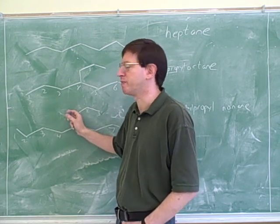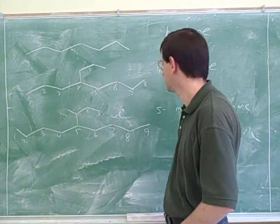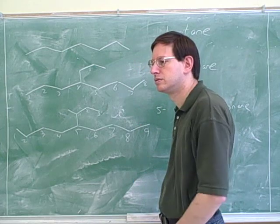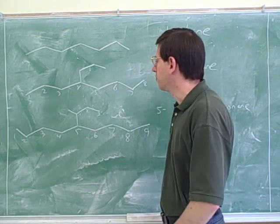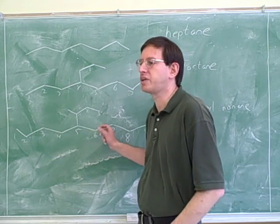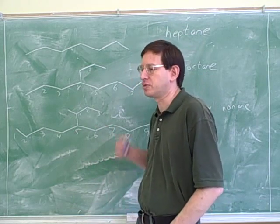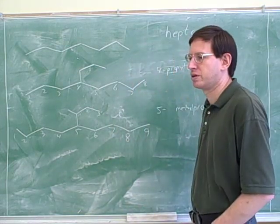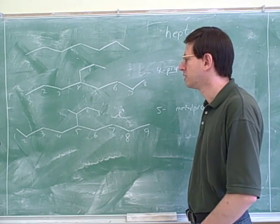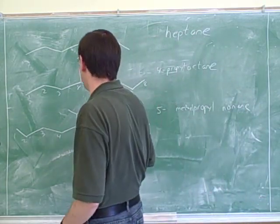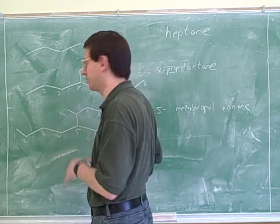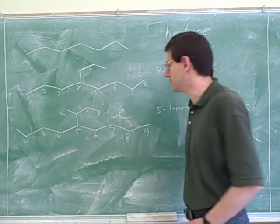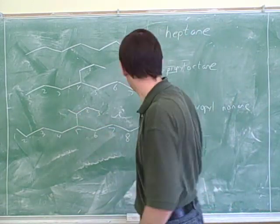The number one carbon in the substituent is always the carbon that's connected to the parent chain. That's a totally different rule than we use for figuring out the number one carbon in the parent chain. How do we figure out the number one carbon in the parent chain? Well, we try to number from the side that will give us the lowest possible numbers for our substituents. But there's a completely different method for finding the number one carbon on the substituent. That one will always be the carbon that's directly connected to the main chain. So this has to be the number one carbon. Not because it has a substituent on it, but because it's directly connected to the main chain.